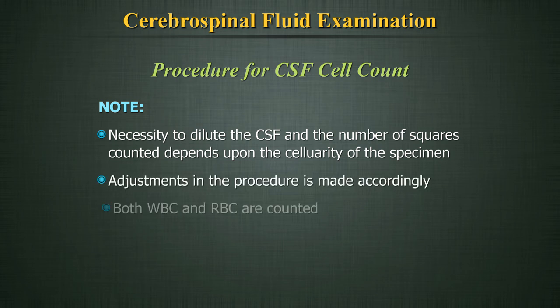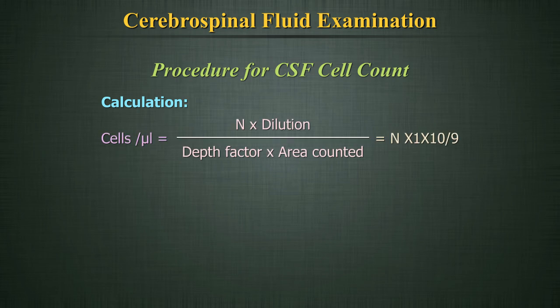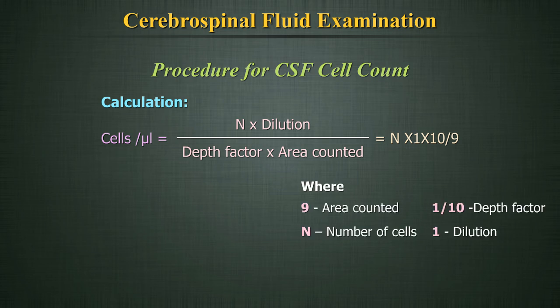Calculation: Cells per microlitre = N × 1 × 10 ÷ 9, where 9 is the area counted, N is the number of cells, 1/10 is the depth factor, and 1 is the dilution.